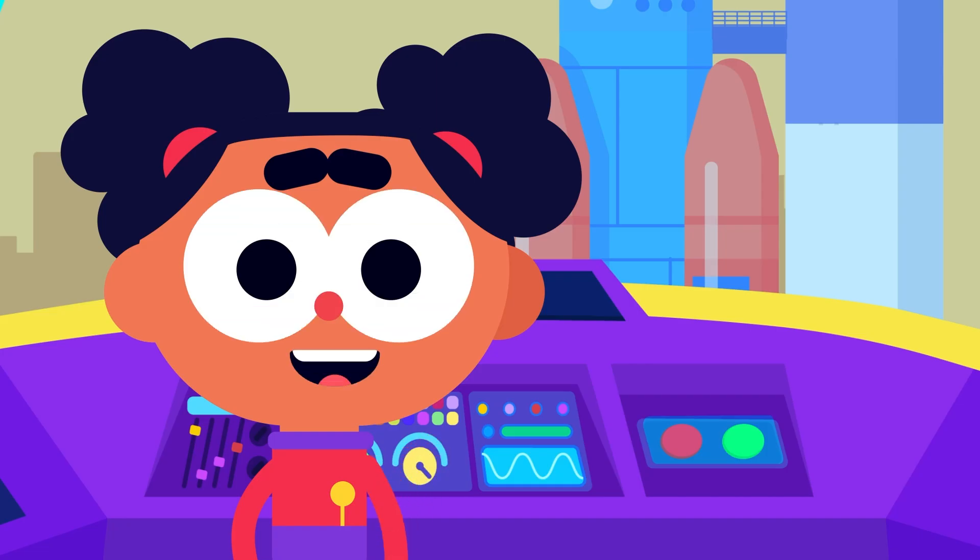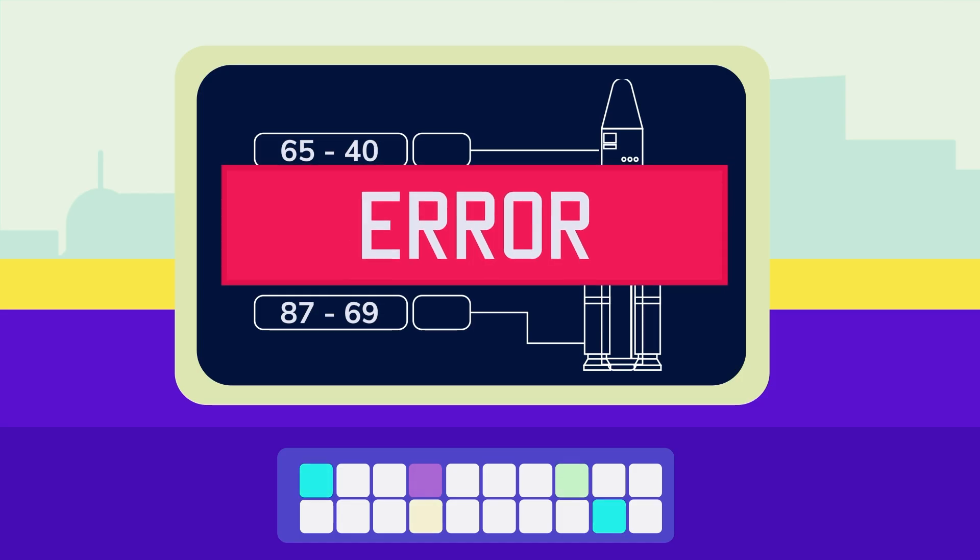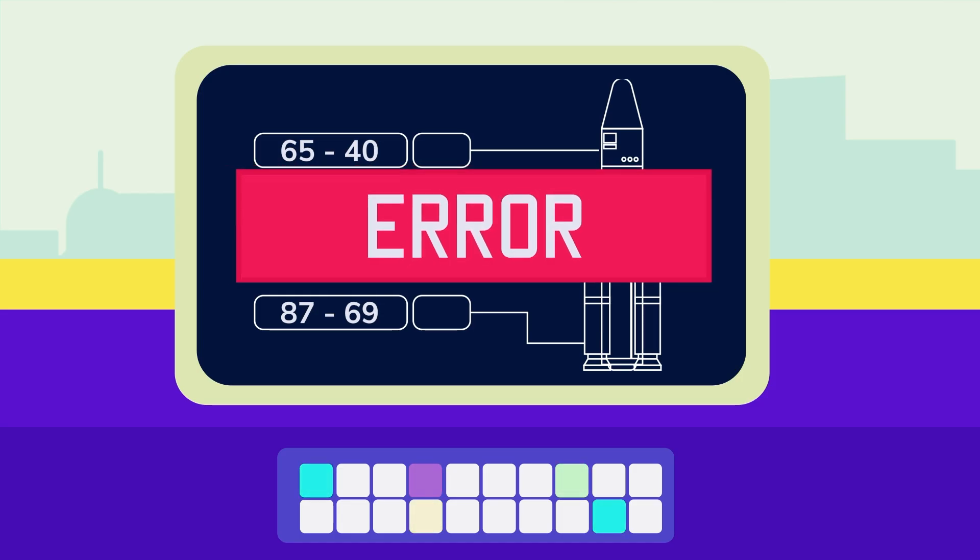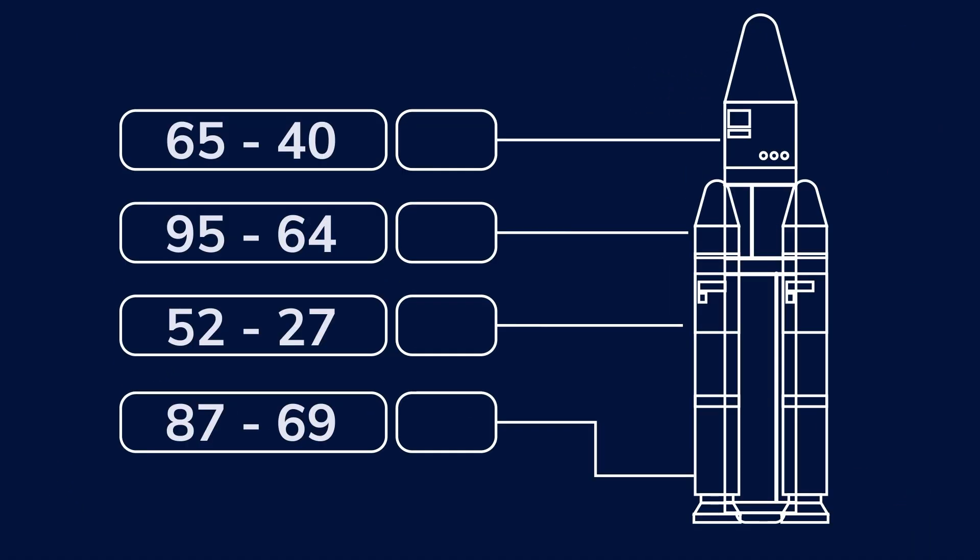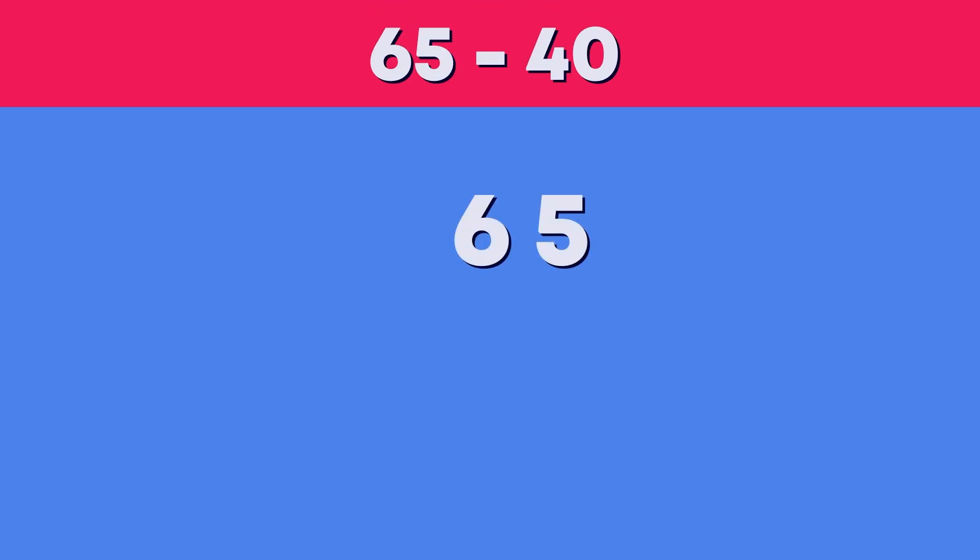Hi friends, it's me Ava reporting from mission control. The code breaker is broken. Will you help me solve some subtraction sums to crack the rocket launch code? The first number in the code is 65 minus 40. That's 65 minus four tens.